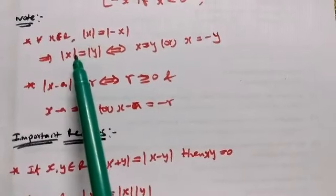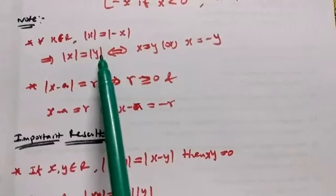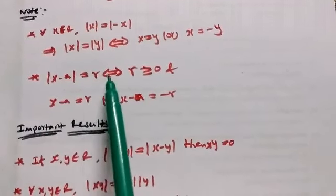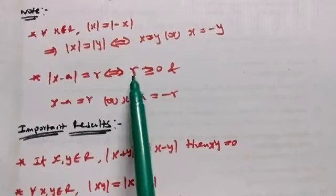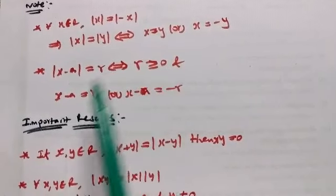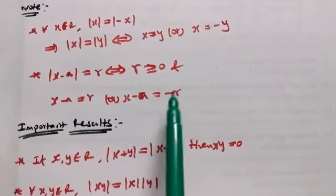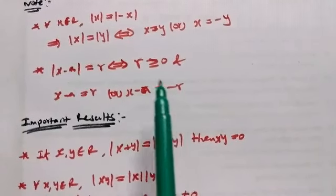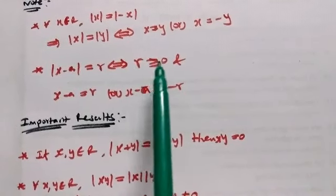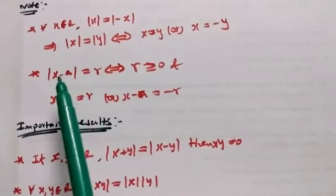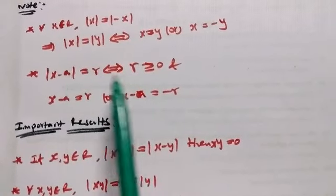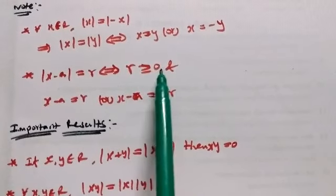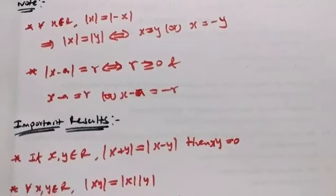Modulus of X minus A is equal to R if and only if R is greater than or equal to 0, and X minus A is equal to R or X minus A is equal to minus R. So X minus A equals R and minus R, which equals R.